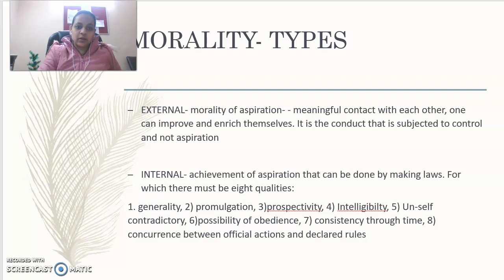The second type of morality Fuller discussed is internal morality, where the focus is on the achievement of aspiration through making laws for which there must be eight qualities: generality, promulgation, prospectivity, intelligibility, non-self-contradictory, possibility of obedience, consistency through time, and concurrence between official actions and declared rules.